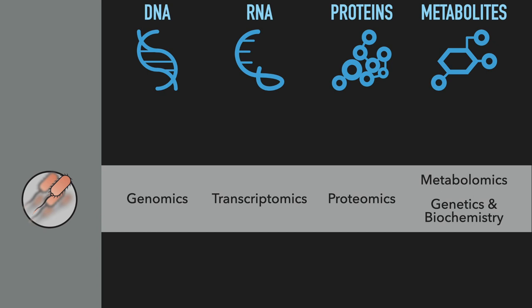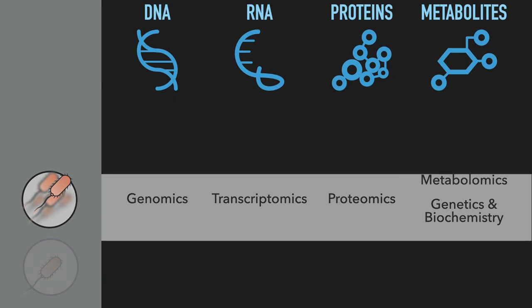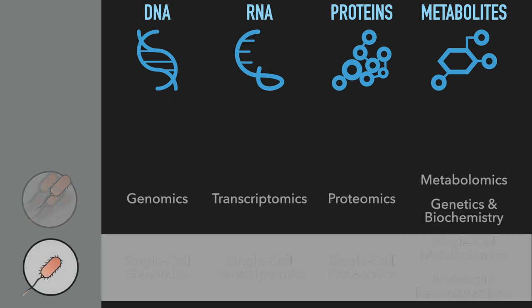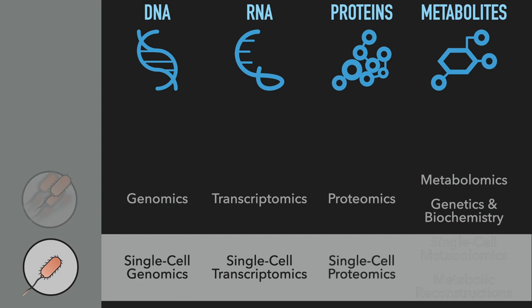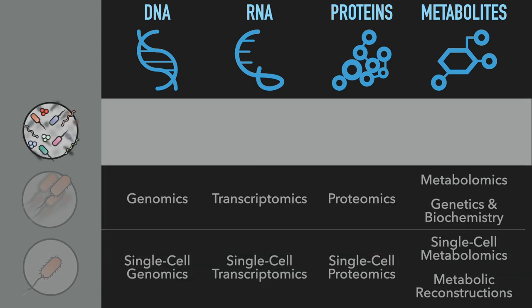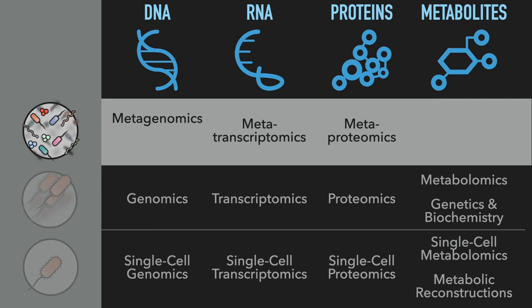Importantly, this type of setup is limited to organisms that we can grow in culture, and there are other alternatives. One is by characterizing single cells, which can be directly extracted from the environment through single cell genomics, transcriptomics, proteomics, and metabolomics. Another option is trying to characterize entire communities all together. The studies of all the DNA, transcribed RNA, and expressed proteins from entire communities are called metagenomics, metatranscriptomics, and metaproteomics. Entire communities, including the surrounding milieu, can also be studied through metabolomics.